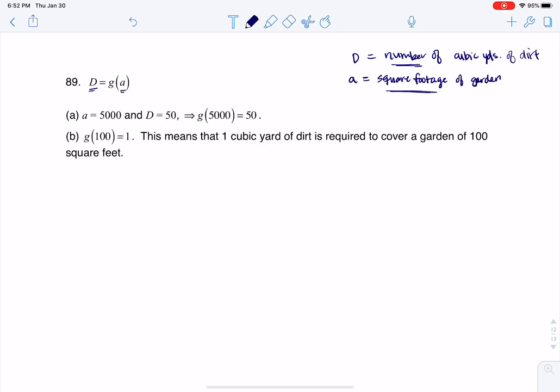So the first thing we're told for part A is that this garden has an area of 5,000 square feet, right? And we can even see, I'll put notes here.